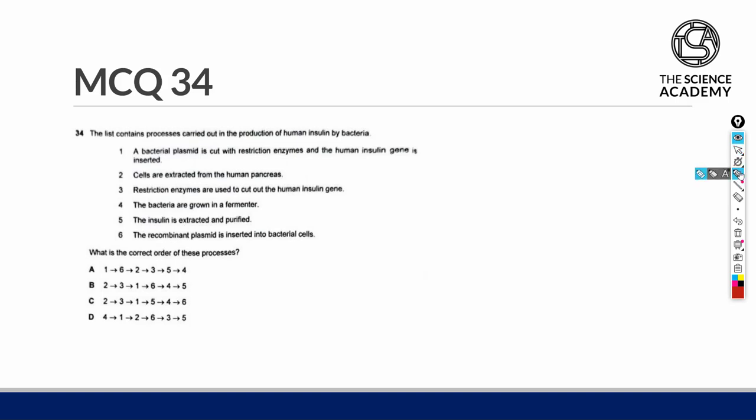Question 34. The list contains processes carried out in the production of human insulin by bacteria. What is the correct order of these processes?